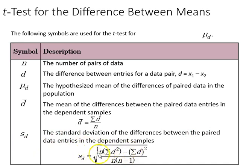And s d is the standard deviation of differences between the paired data entries and dependent samples. That is found with this equation down here, and you can see the adjustment for degrees of freedom in the denominator here. It's simply the sample size times the sum of the difference squared minus the sum of the difference squared. That's going to give us our s d.